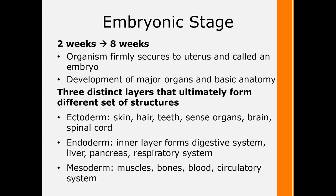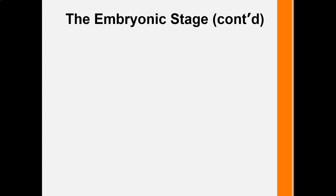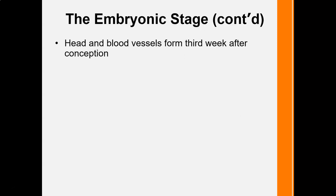The endoderm, the inner layer, becomes the digestive system, liver, pancreas, and respiratory system. The mesoderm, the middle layer, becomes muscle, bones, blood, and the circulatory system. The head, brain, spinal cord, and heart are forming rapidly during the embryonic stage.